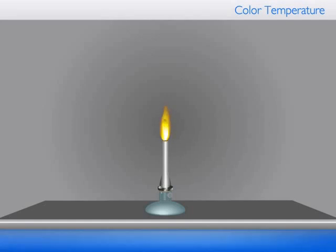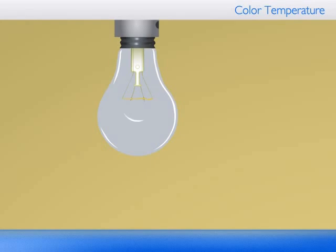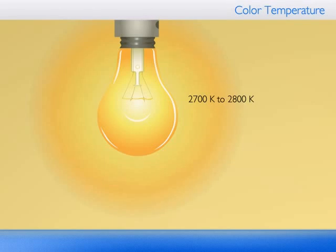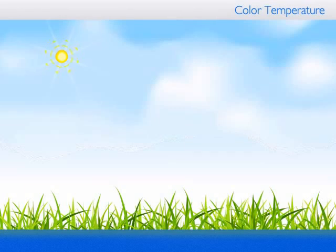The flame of a candle, which burns carbon particles at a temperature of around 2,000 Kelvin, emits a yellow light. The filament of an incandescent lamp, which has a temperature around 2,700 Kelvin to 2,800 Kelvin, is yellowish-white. The sun at noon, which has a temperature around 5,000 Kelvin, is white.